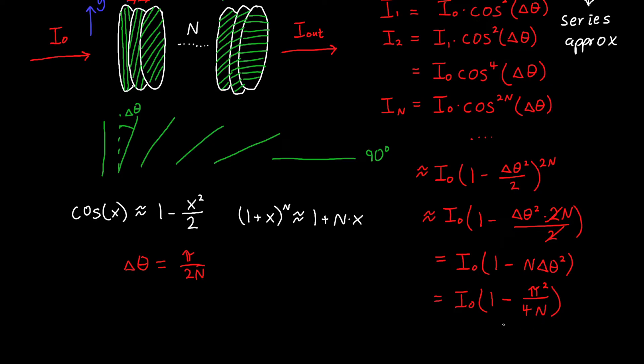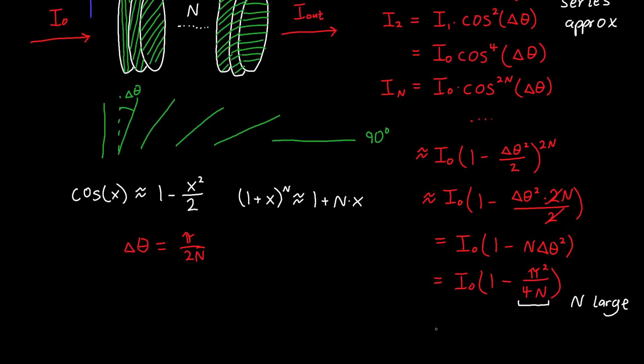This is a really interesting expression, because we originally said that n is large, and here we've got an n in the denominator. So our output intensity is actually approximately just equal to our input intensity, because this whole term, π² over 4 is basically 1 for all intents and purposes, and n is very large, so this is a very small number. Our output intensity is very close to our input intensity.